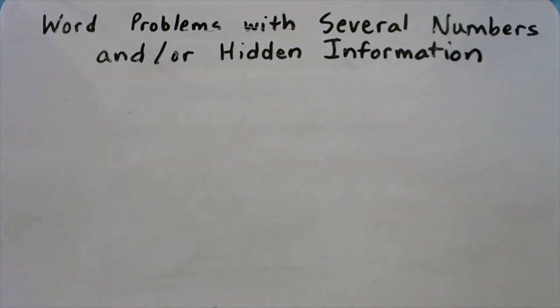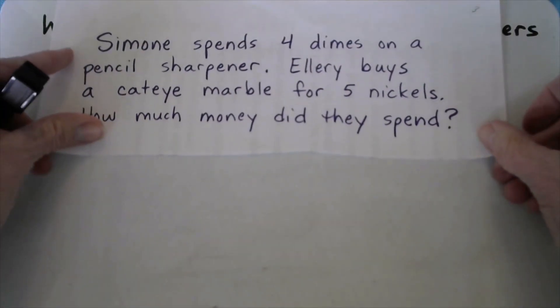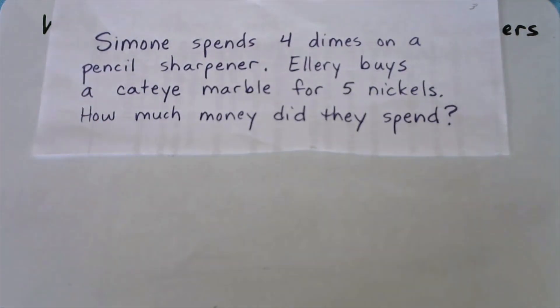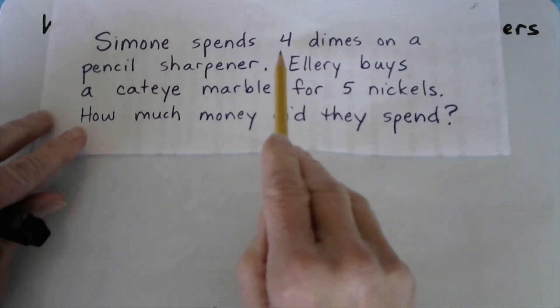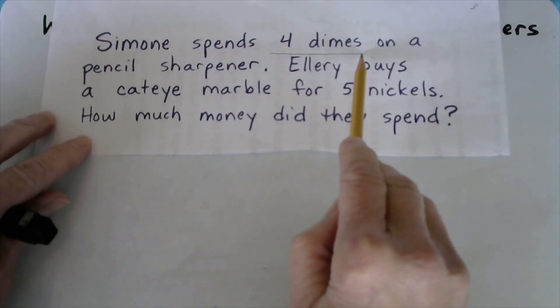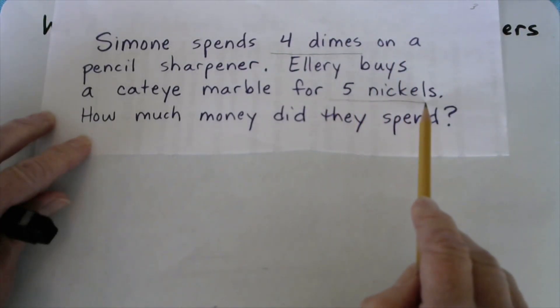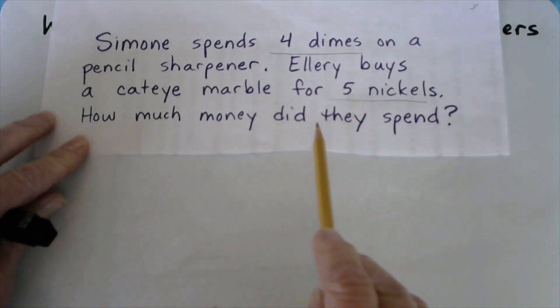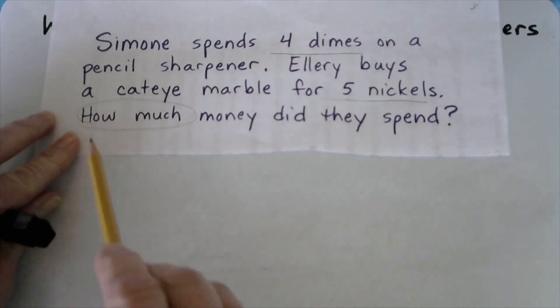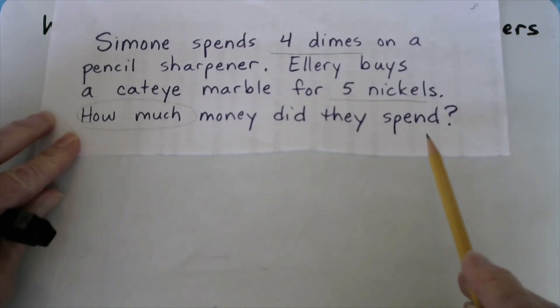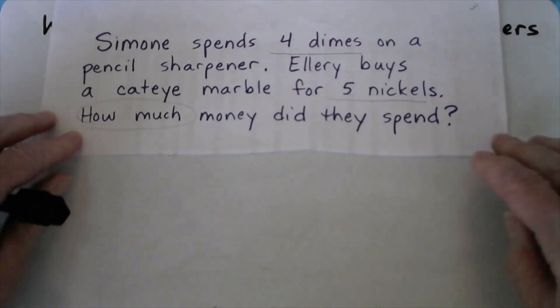Let's look at this word problem about Simone and Ellery. Let's read together. Simone spends 4 dimes on a pencil sharpener. Ellery buys a cat eye marble for 5 nickels. How much money did they spend? Well, let's understand what we know. Simone spent 4 dimes. Ellery spent 5 nickels. And they're asking how much money did they spend? So go ahead and solve this. Pause the video and solve and we'll look at some different ways you may have approached it.